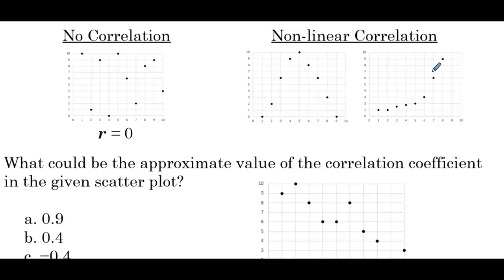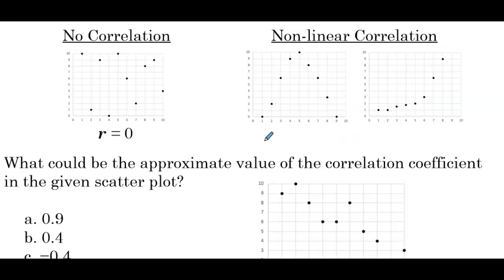Another example — linear probably wouldn't be the best choice here either. We'd want to use some sort of exponential function to represent the data so that the points are all close to that curve. So these are some examples of nonlinear correlation that we could see.